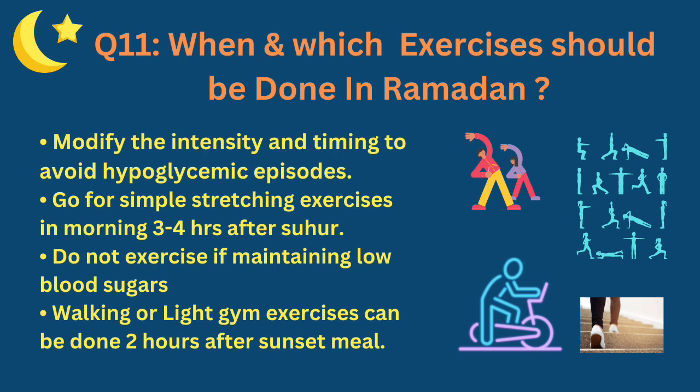When and which exercises should be done in Ramadan? Modify the intensity and timing of exercise to avoid hypoglycemia. Go for simple stretching exercises in the morning, three to four hours after sahur. Do not exercise if you are maintaining low blood sugar levels. Walking or light gym exercises can be done two hours after the sunset meal. You can modify the regime as per your age, requirement, and schedule.